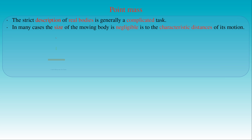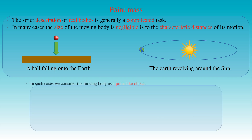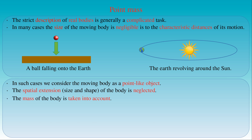For example, in the case of a falling ball or the earth revolving around the sun, we can consider the body as a point-like object. This means we neglect the spatial extension — that is, the size or shape of the object — but we still take the mass of the body into account. As a result, we consider a given body as a point-mass or a point-like particle with a given mass.